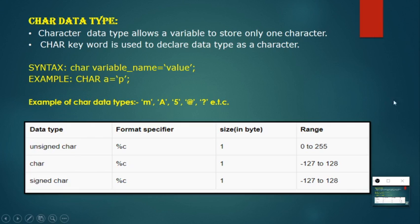All three character types have a common size of 1 byte. The range for unsigned char is 0 to 255, and for both signed char and char it is -127 to 128.